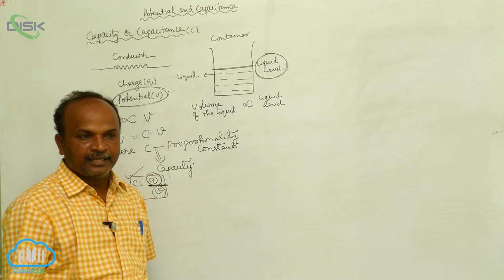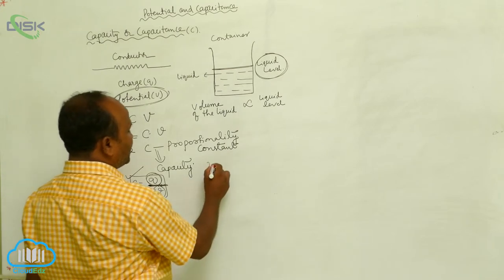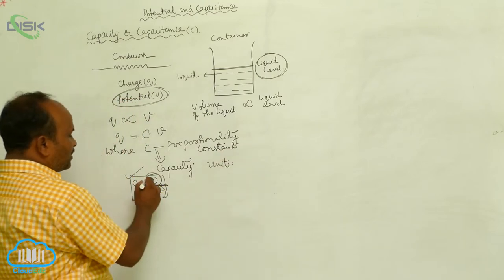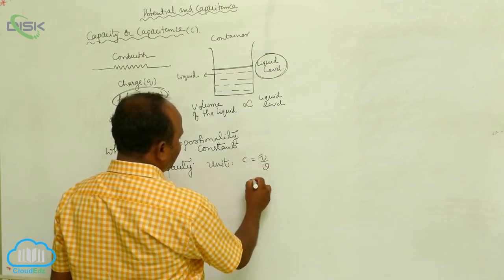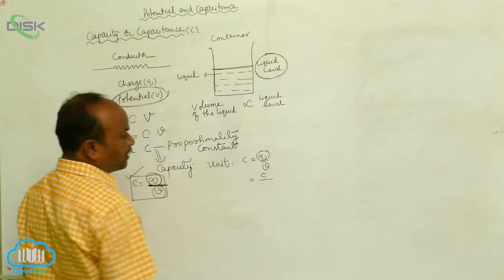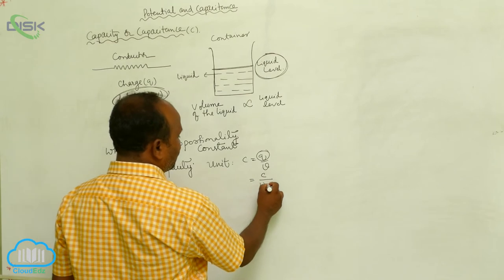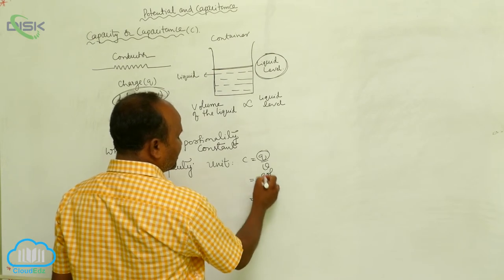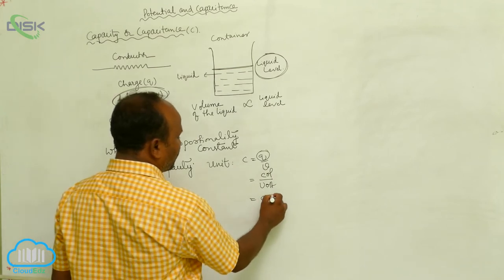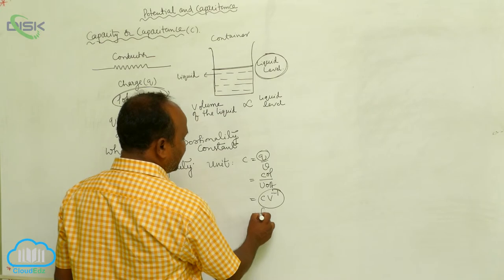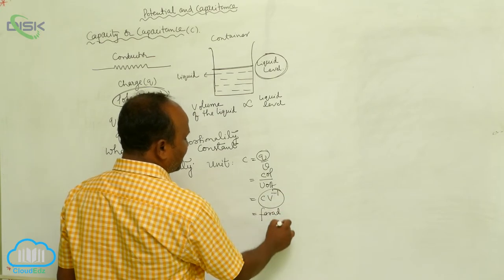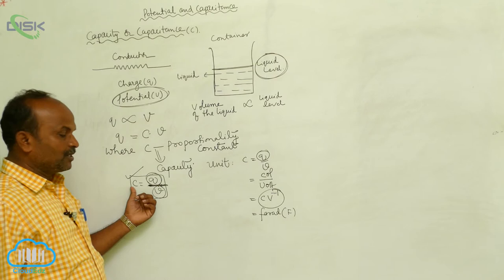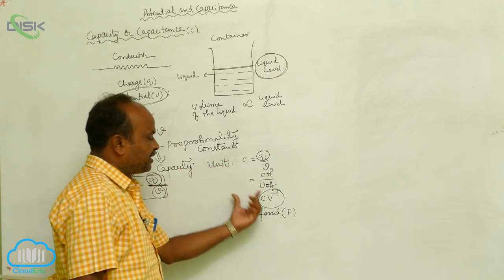What is the unit of capacity? Since C equals Q divided by V, and Q is in coulombs and V is in volts, the unit is coulombs per volt. This coulombs per volt is called the farad, represented by F. So the unit of capacity is the farad.